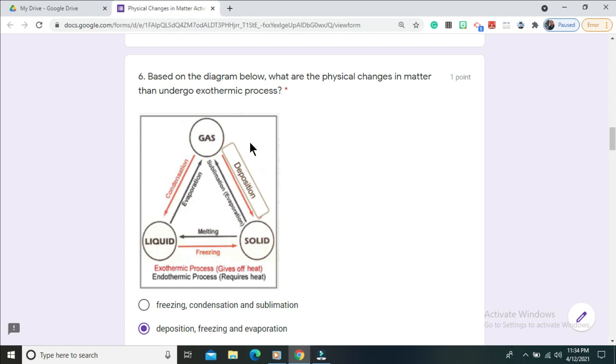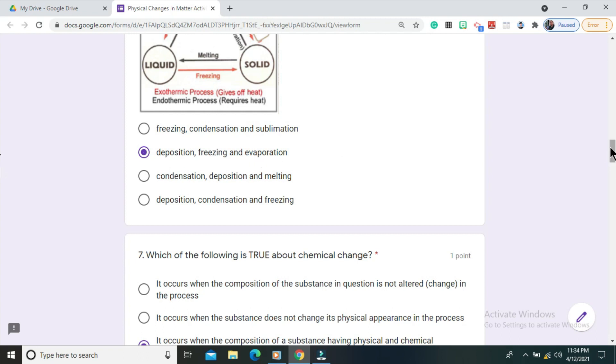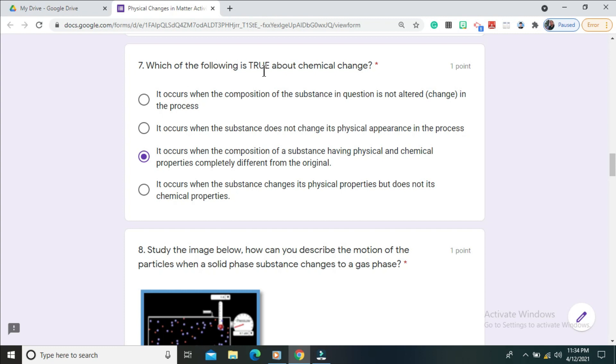Question number six: based on the diagram below, what are the physical changes in matter that undergo exothermic process? The correct answer is deposition, freezing, and evaporation. Question number seven: which of the following is true about chemical change?